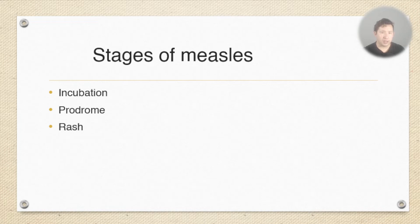So measles is a highly infectious viral disease and it goes through these three stages. You get the incubation phase, then you get a prodrome, and then you get the development of the rash. I'll go through each of those stages now.